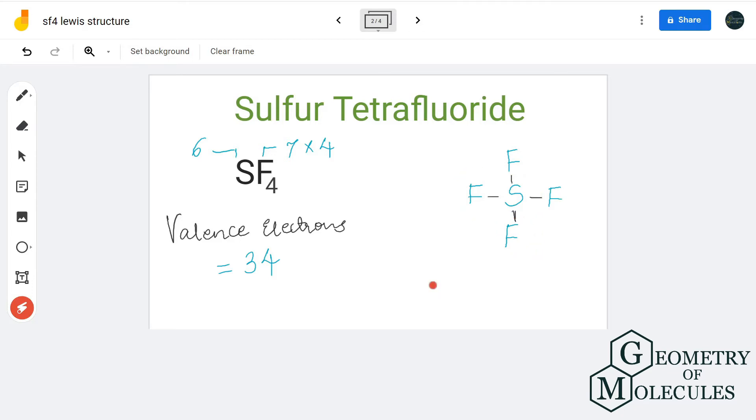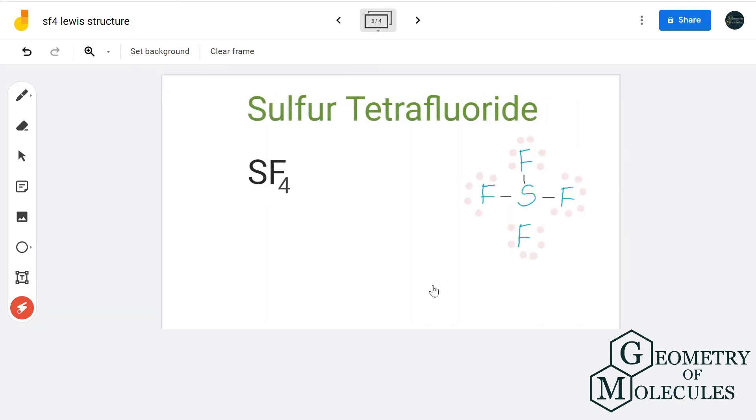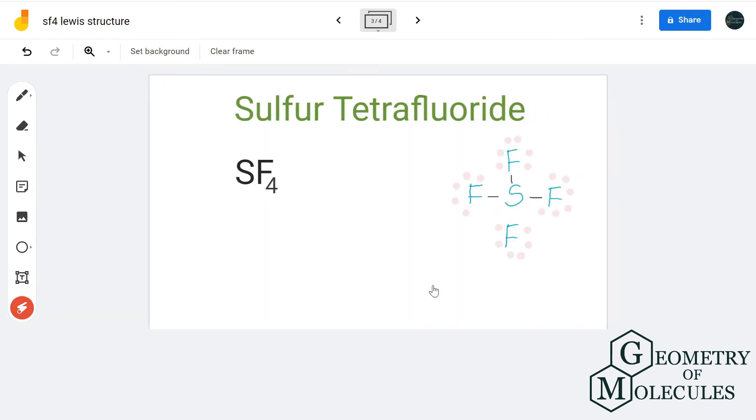Each bond will take two valence electrons. In total, eight valence electrons will be used up out of 34. Put the remaining valence electrons around the atoms like this: 10, 12, 14... 32. But if you remember, there were 34 valence electrons.